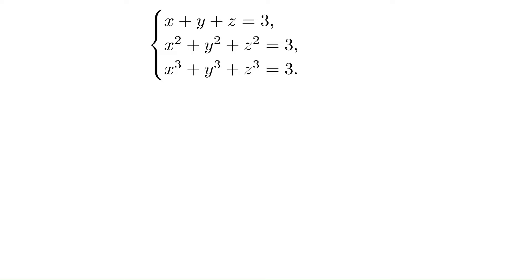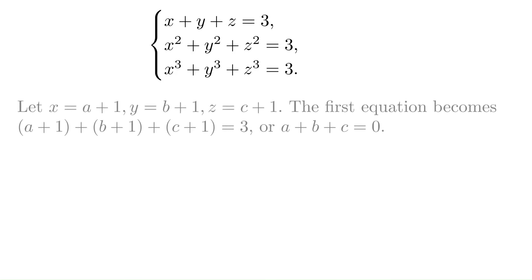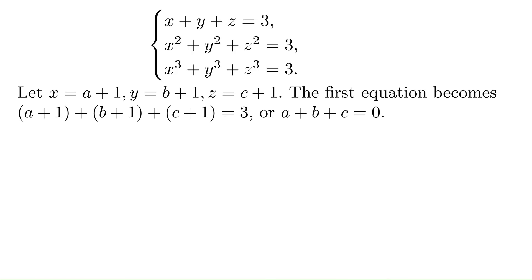The first approach: let x equals a plus 1, y equals b plus 1, and z equals c plus 1. So the first equation becomes a plus 1 plus b plus 1 plus c plus 1 equals 3, so a plus b plus c equals 0, as we expected.